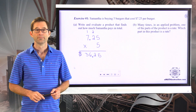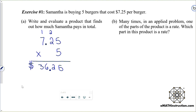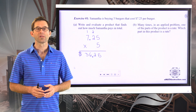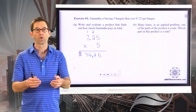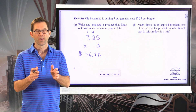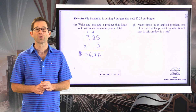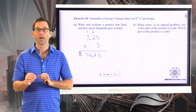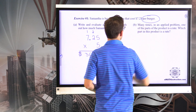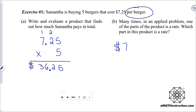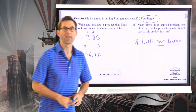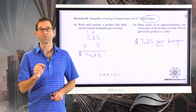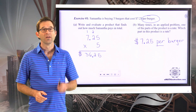Letter B: many times in an applied problem, one part of the product is a rate. Rates are things like miles per hour, cousins per person, or dollars per burger. A rate almost always has the word 'per' in it, because we're describing how much of one thing there is per one unit of another thing. The $7.25 per burger is a rate. Often in multiplication problems, one of the numbers is a rate, especially in an applied problem.